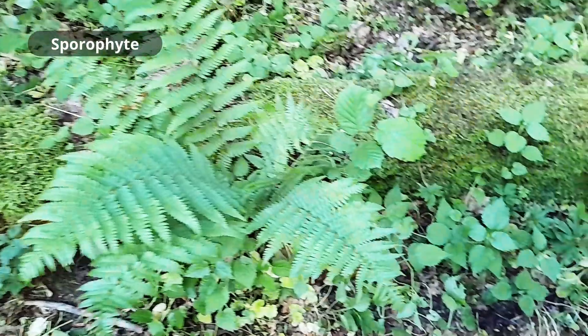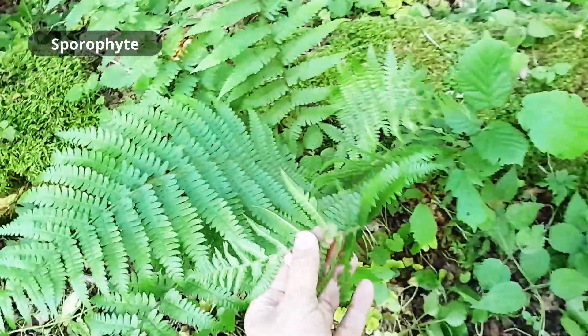So what you have is an alternation of generations. You have the big plant called the sporophyte generation - that's the big fern plant that we see here. It's called sporophyte because it produces the spores. Then the spores form the small gametophyte because it produces the sperm and the eggs, called the gametes. That's why it's called gametophyte. You have sporophyte and gametophyte and sporophyte. This is called an alternation of generations, but there are no seeds there. It's a completely different life cycle.